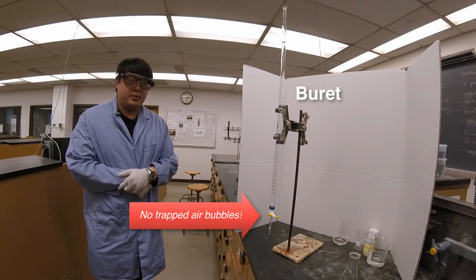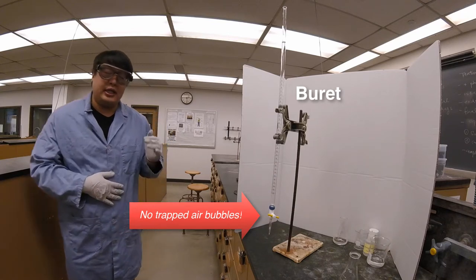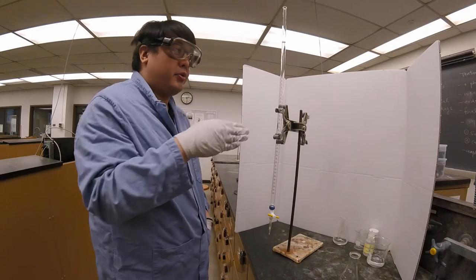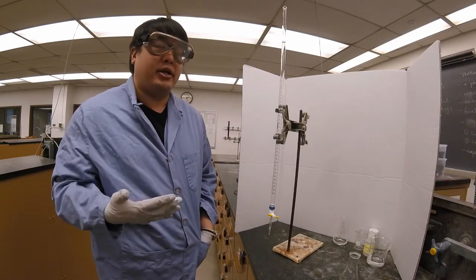When you read the volumetric buret, it's really important you want to take the initial volume. And when you look at the volumetric buret, you'll notice that there are major and minor tick lines.